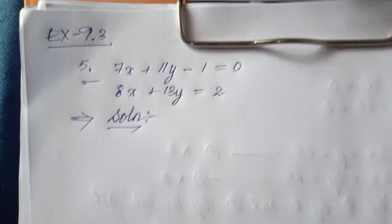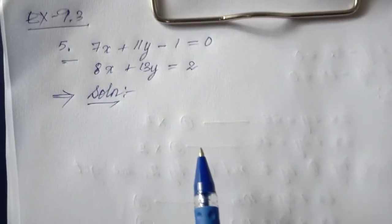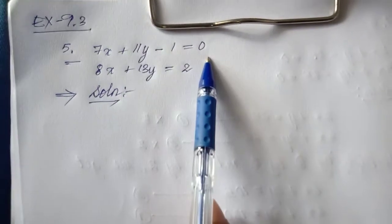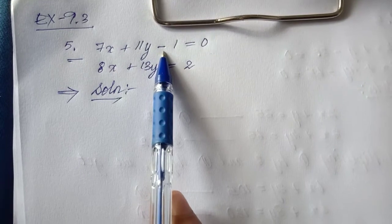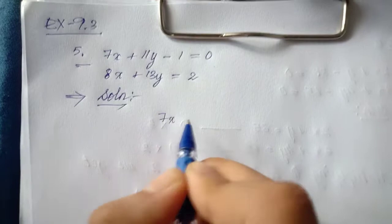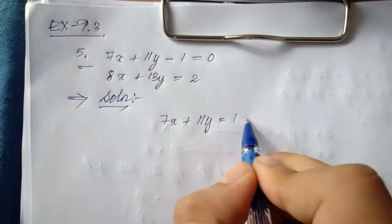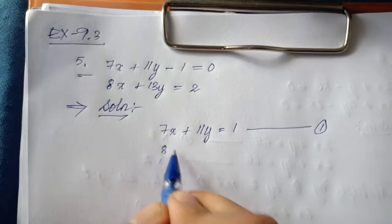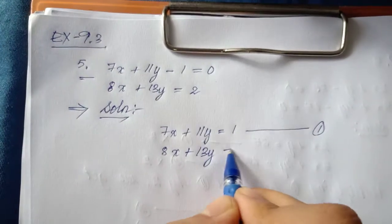Class 9, Exercise 9.3, equation number 5. First, I will look at the given equations. The first equation is 7x plus 11y minus 1 equal to 0. I have a constant term on the left-hand side, so I have to move it to the right-hand side. This will become 7x plus 11y equal to 1 — this is equation 1. The second equation is 8x plus 13y equal to 2, so no change is needed — this becomes equation 2.